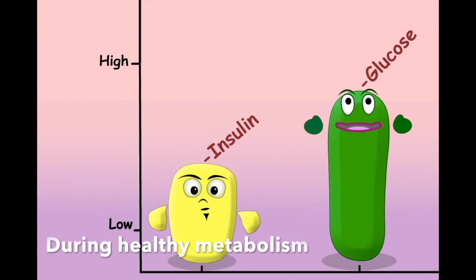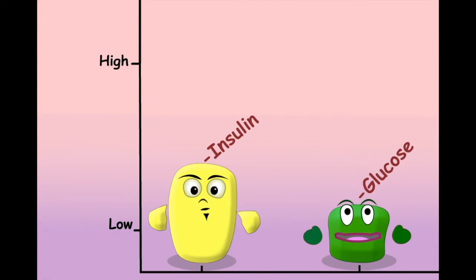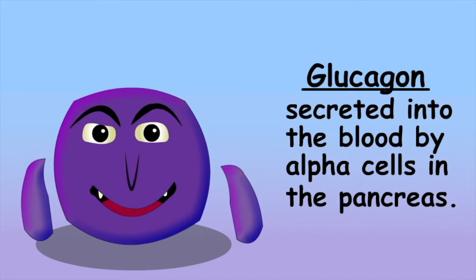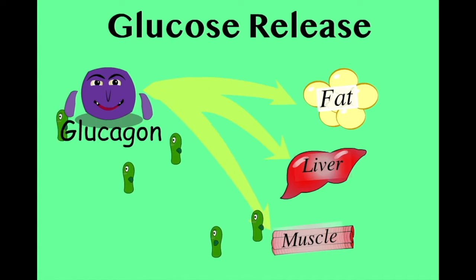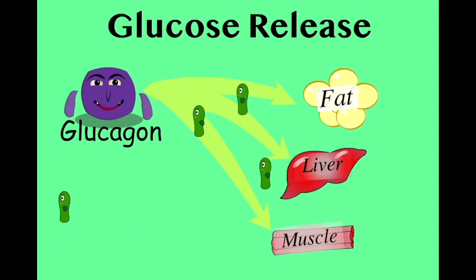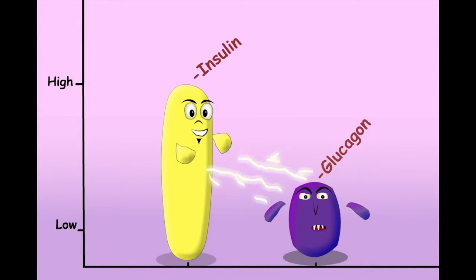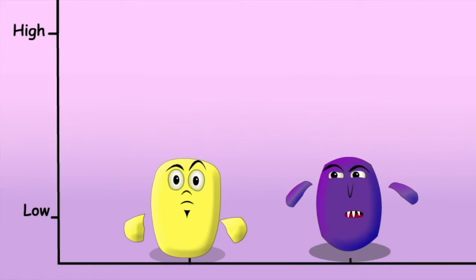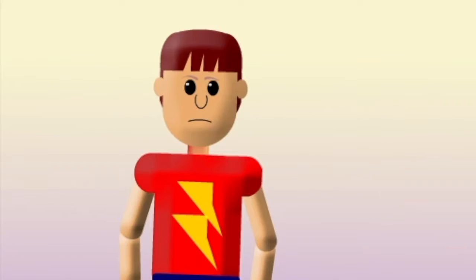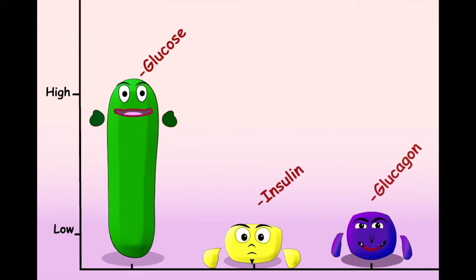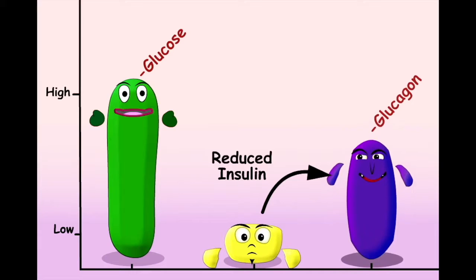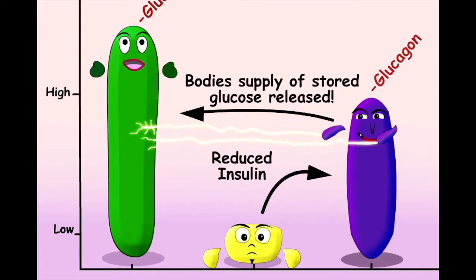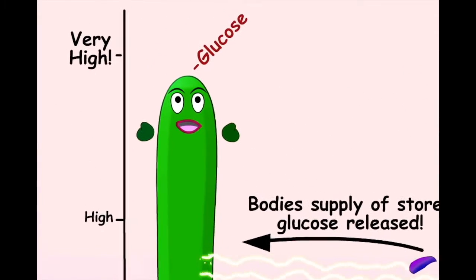When blood glucose levels become low, some of the stored glucose is released. This process is regulated by the hormone glucagon. Like insulin, glucagon is secreted by the pancreas, but rather than promoting the storage of blood glucose it has the opposite effect. When glucagon interacts with muscle, liver and fat cells, it stimulates them to release some of their stored glucose. The secretion of glucagon is regulated by insulin. High insulin levels inhibit the release of glucagon from the pancreas, while lower insulin levels allow for some glucagon to be secreted into the blood. Tim's blood insulin levels are now very low. As the release of glucagon is now not being inhibited at all, this leads to a lot being secreted from the pancreas, stimulating large quantities of the body's stored glucose supplies to be released into his blood. Tim's blood glucose levels are rising even higher.